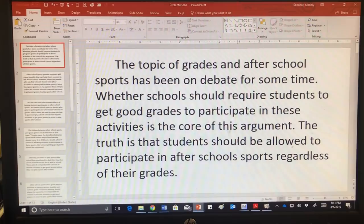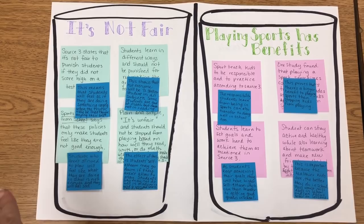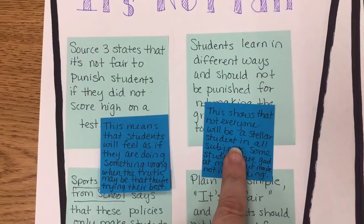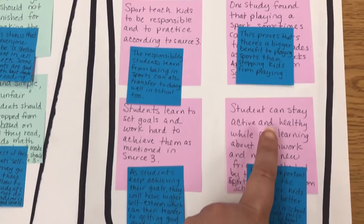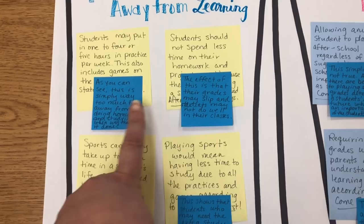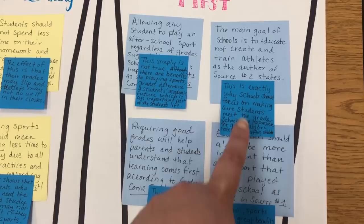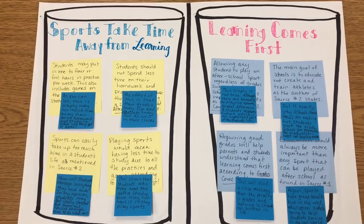As for the bucketing-the-evidence activity, I showed you yesterday's paper without the elaboration stickies — today I added those elaboration stickies to elaborate more on the evidence in each bucket. One supports 'it's not fair' and the other supports 'playing sports has benefits,' with little stickies showing my elaboration on each piece of text evidence. On the flip side with the opposing view, I have elaboration stickies for 'sports take time away from learning' and 'learning comes first.' These are all my elaboration stickies that complete the bucketing activity, and this is what the students also worked on finishing today.